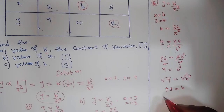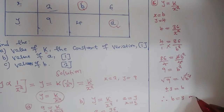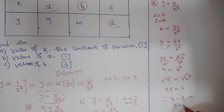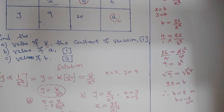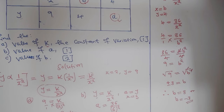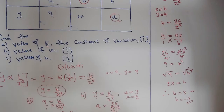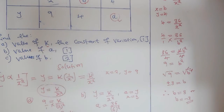Therefore b = 3 or b = −3. Those are the answers. Make sure you follow it carefully and attentively. Thank you so much for watching, and I will see you in the next video.